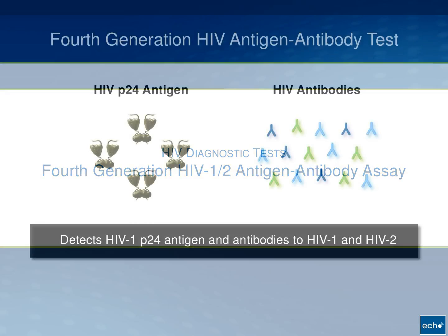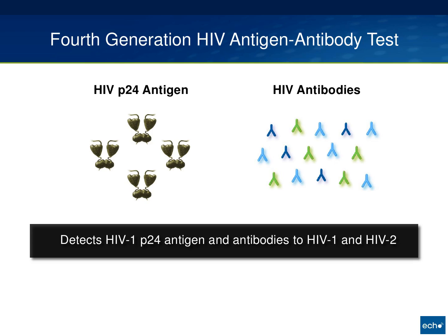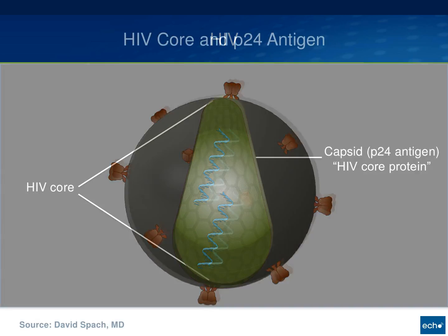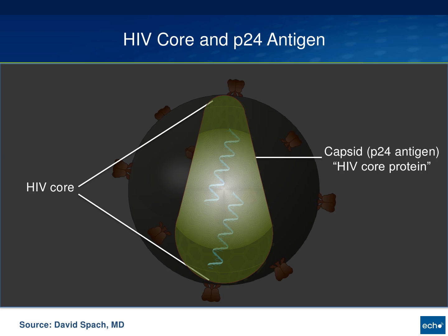The basic concept is that you're trying to detect whether the person being tested has circulating HIV P24 antigen and/or circulating HIV antibodies that have responded to any of the key HIV antigens. The P24 antigen is derived from the viral core or capsid, forming this lattice-like structure that contains the HIV single-stranded RNA, reverse transcriptase enzymes, and integrase enzymes.